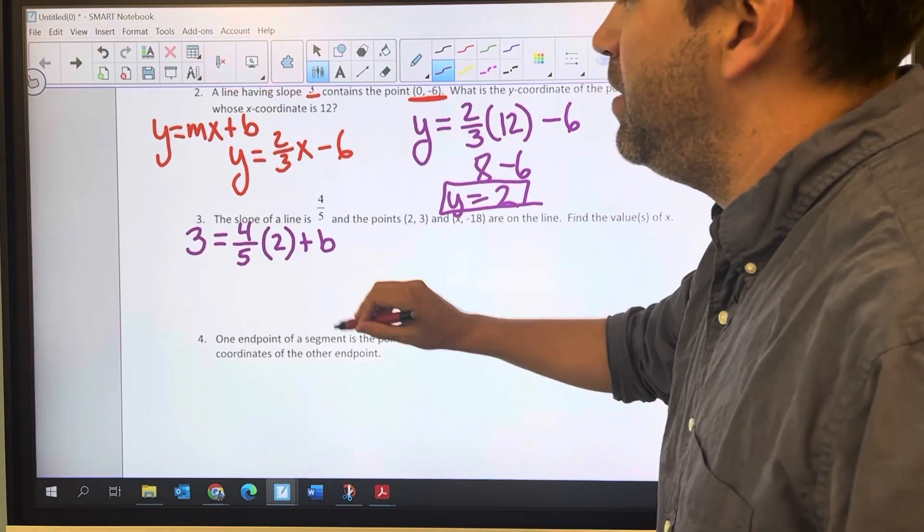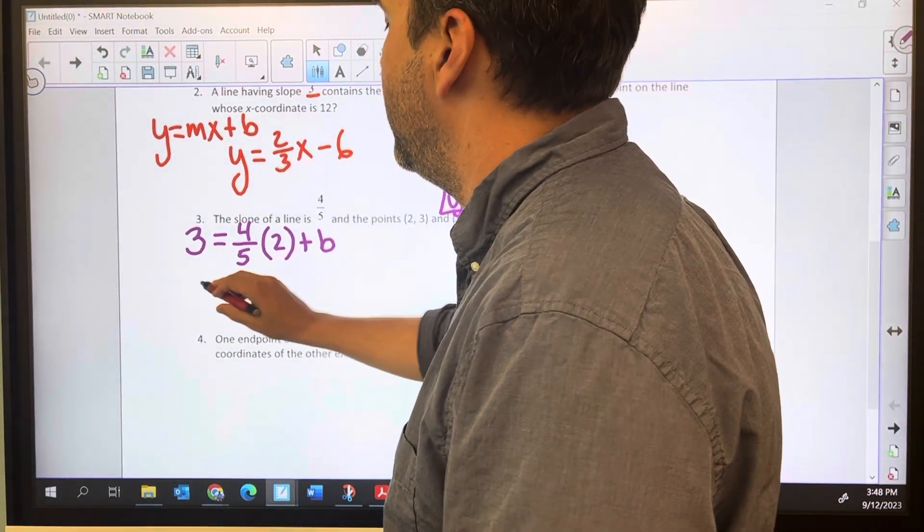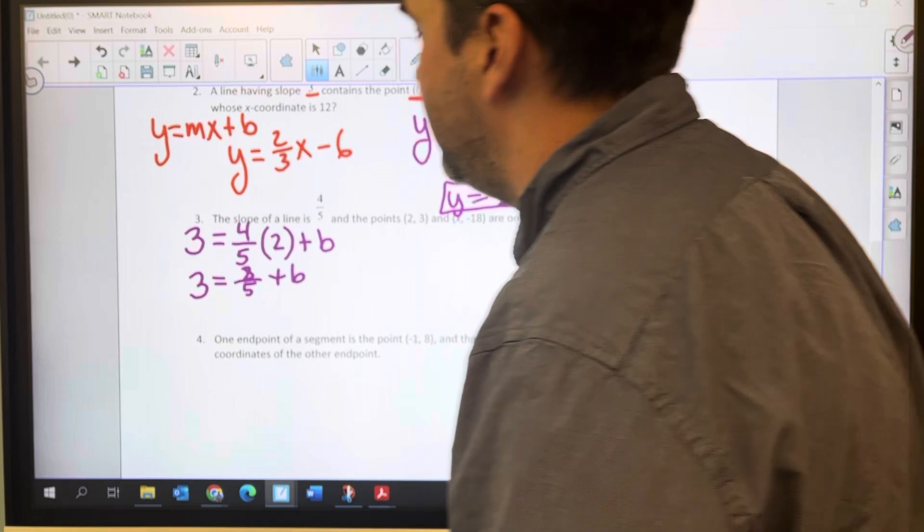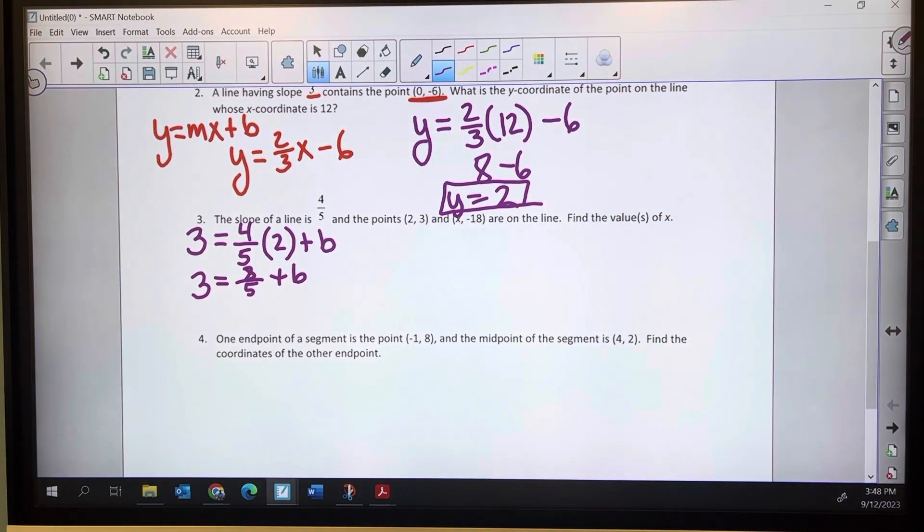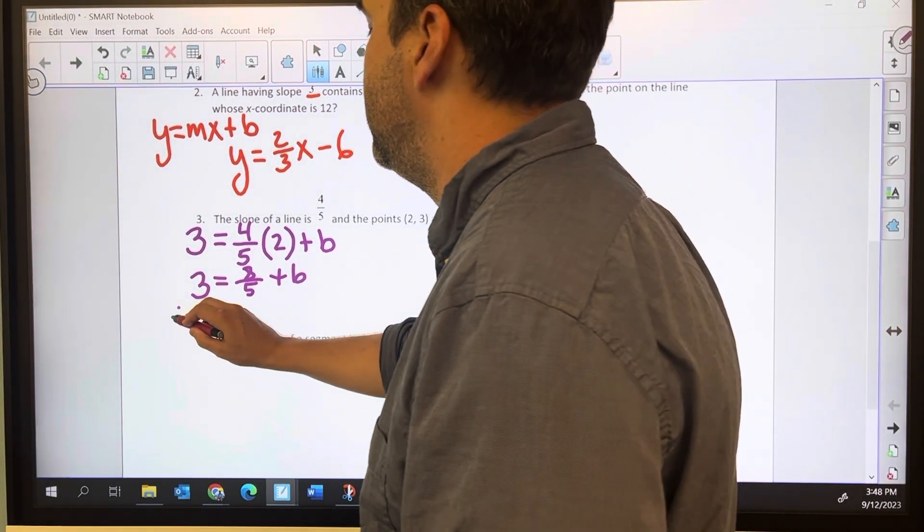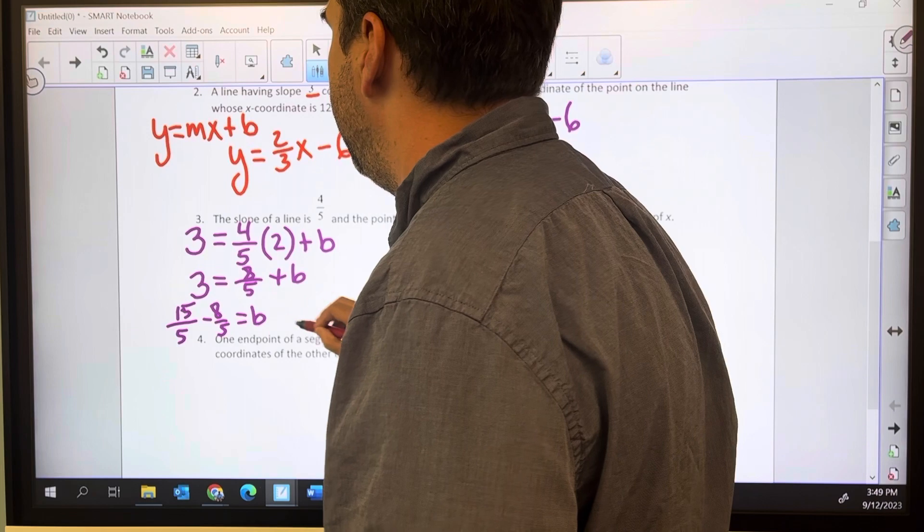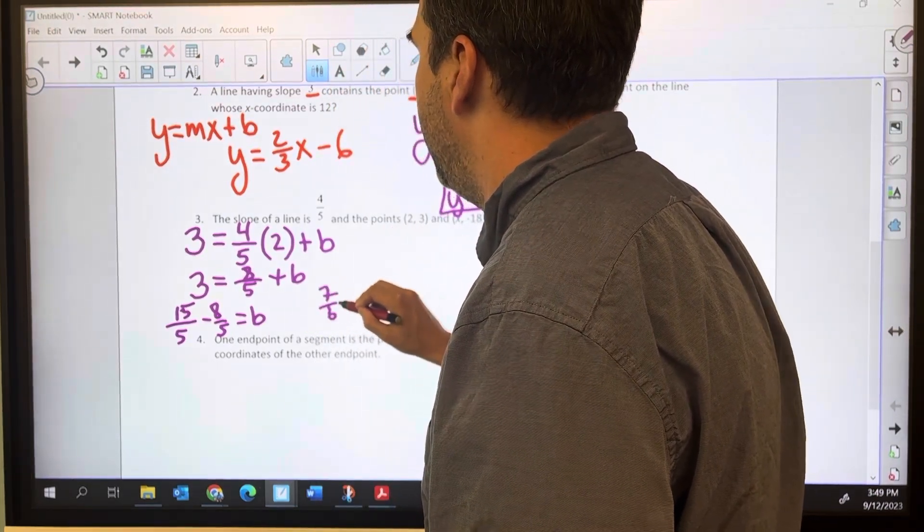And that's what we're trying to find is that b value right there. We're going to have some fraction work here. 3 equals 8 fifths plus b. At this point, if you're really relying on that calculator, you're going to be turning into decimals. It's not a big deal in this problem because the decimals are pretty manageable, but I want you to be aware that when we get into those decimals that are repeating, that are longer, that math might trip you up. So I'm going to subtract 8 fifths from both sides.